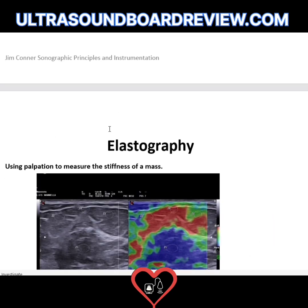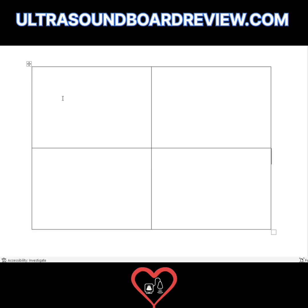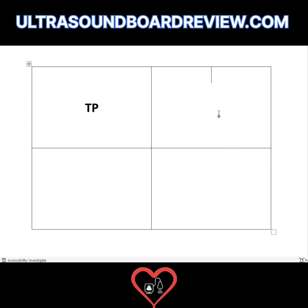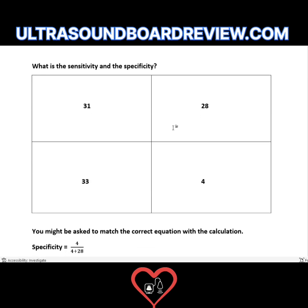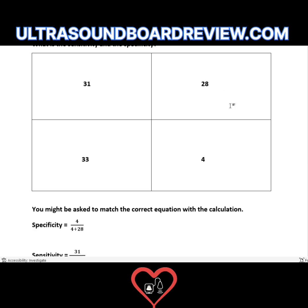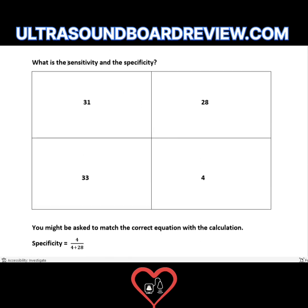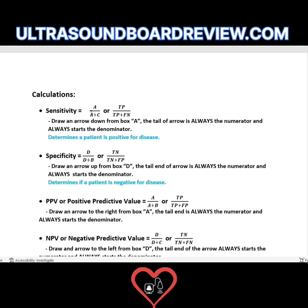Now let's see how well you know this. What goes in each box of the 2x2 table? TP goes here, FP here, TN here, and FN here. You'll need to know the equations for statistics. If they ask what is the sensitivity and specificity, let's start with sensitivity. How do we calculate sensitivity? Here are the equations.